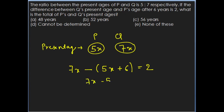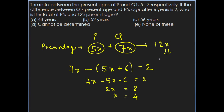The difference between Q's present age and P's age after 6 years is 2: 7x minus (5x plus 6) equals 2. So 2x minus 6 equals 2, giving 2x equals 8, therefore x equals 4. The total of P's and Q's present ages is 5x plus 7x equals 12x equals 12 into 4 equals 48 years.